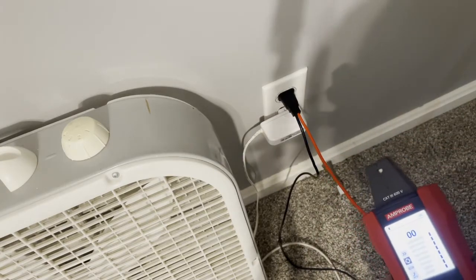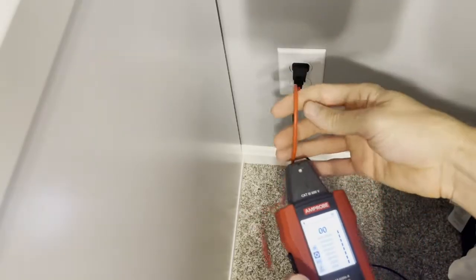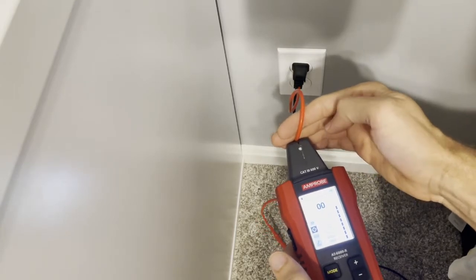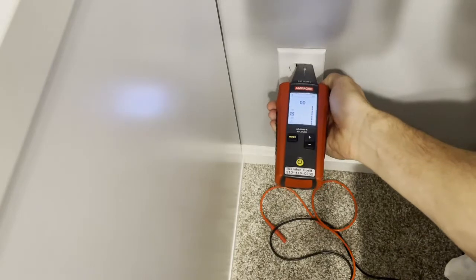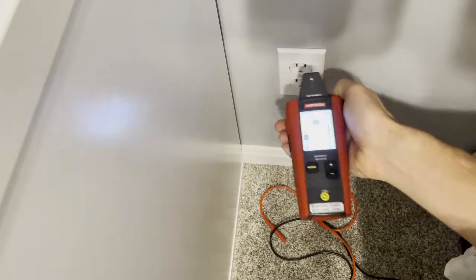So we know that this one is on the circuit that we clamped on, that breaker downstairs. Let's go to the next outlet. This one on the other hand is breaker 25, and you see no signal with it in this.